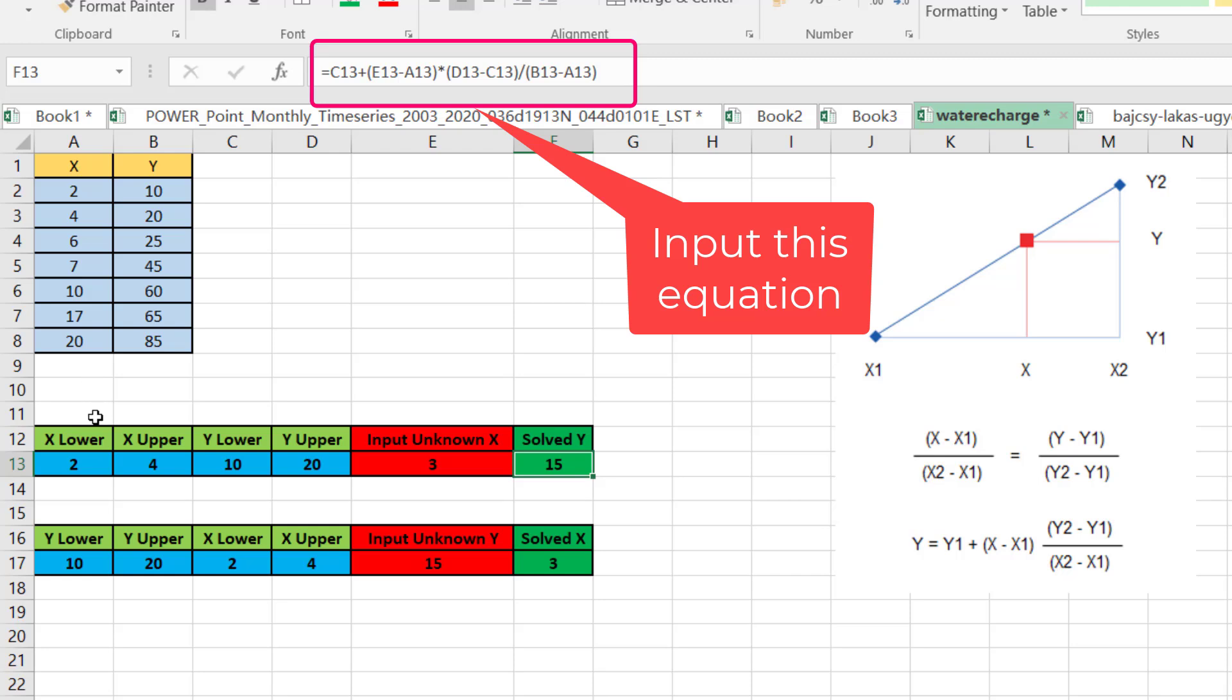And x upper will be 17, y lower will be 60, y upper will be 65.